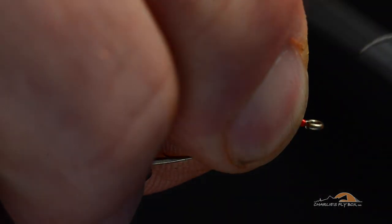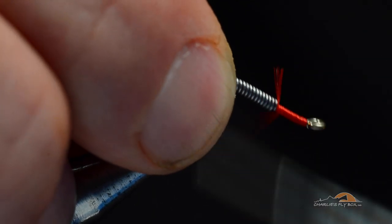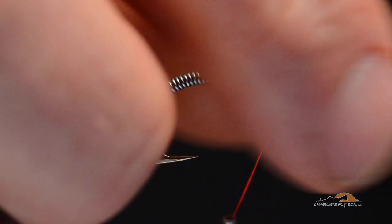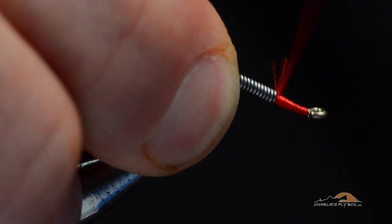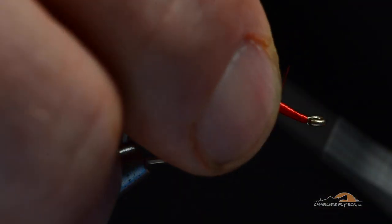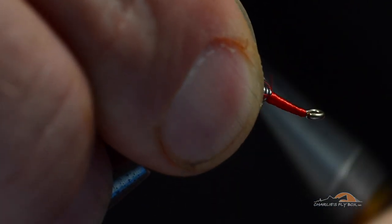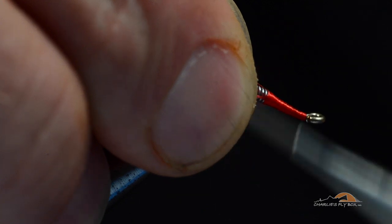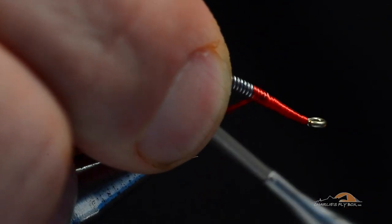You don't want to use just 70 denier. It'll take you all day to build it up. So I started that thread just behind the eye, and I'm not really worried about this tag end. I'll just kind of hold it down. But I'm going to start to build a thread ramp from the hook shank up onto those lead wraps. And you can see how that tag will get caught as I go.